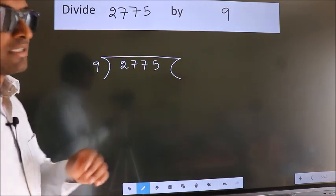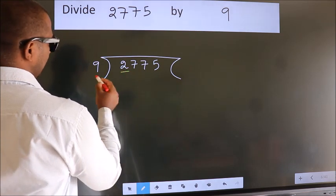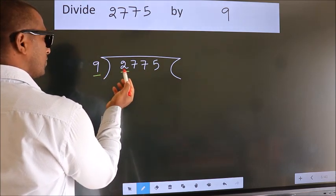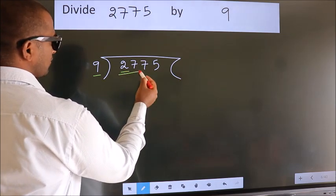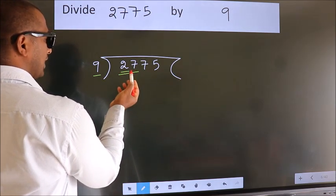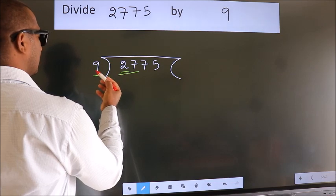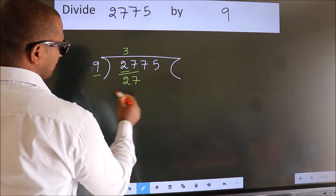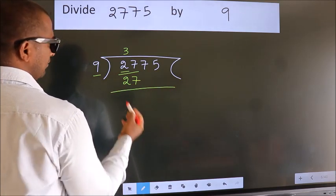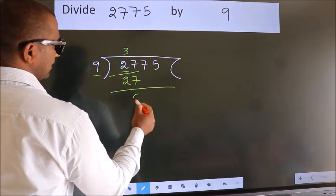Next. Here we have 2. Here 9. 2 smaller than 9. So we should take 2 numbers, 27. When do we get 27? In 9 table. 9 threes, 27. Now we should subtract. We get 0.